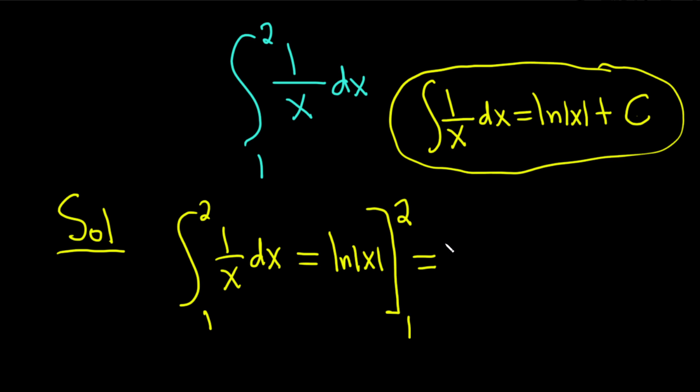You plug in the 2 first so you get the natural log of the absolute value of 2. Subtract and then plug in the 1 so you get the natural log of the absolute value of 1.